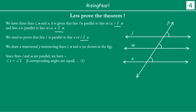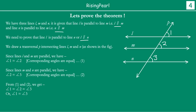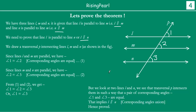Since L and M are parallel, we have angle 1 equal to angle 2 — corresponding angles are equal. This is equation 1. Since M and N are parallel, we have angle 2 equal to angle 3 — corresponding angles are equal. This is equation 2. From equations 1 and 2, we get angle 1 equal to angle 2 equal to angle 3, or we get angle 1 equal to angle 3. Since the transversal P intersects lines L and N such that the pair of corresponding angles — angle 1 and angle 3 — are equal, this implies that line L is parallel to line N by the corresponding angles axiom. Hence the theorem is proved.